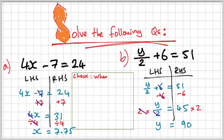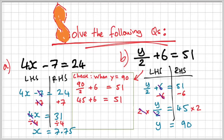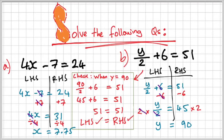Now let's check Part B. We're going to substitute y equals 90: 90 over 2 plus 6 equals 51. 90 divided by 2 is 45, plus 6 equals 51. Since both sides are equal to 51, the left-hand side and the right-hand side are balanced.